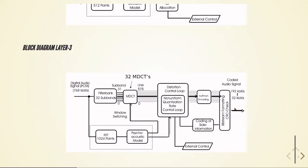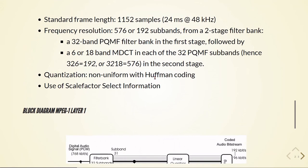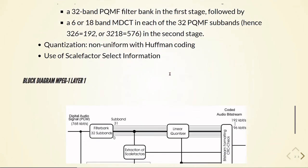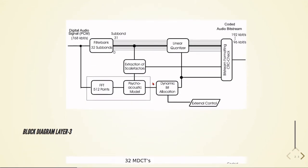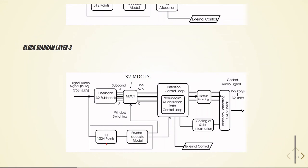For layer 3, we have two stages. The first stage is the 32-subband PQMF filter bank, and the second stage has one MDCT filter bank for each of the 32 subbands, giving either 576 subbands (indices 0 to 575) or 192 subbands. We also see that a 1024-point FFT is used just before the psychoacoustic model. There is a distortion control loop with non-uniform quantization and a rate control loop, followed by Huffman encoding to produce the coded audio signal.